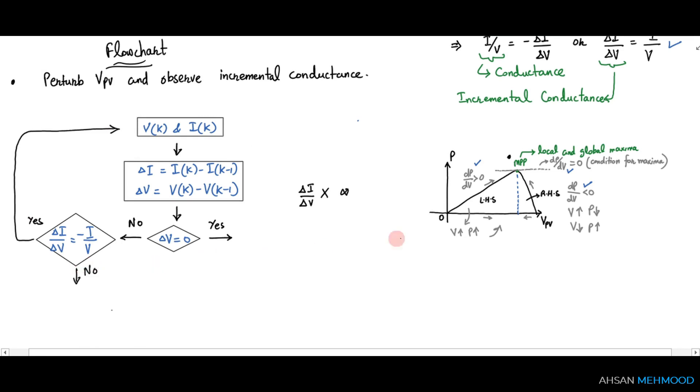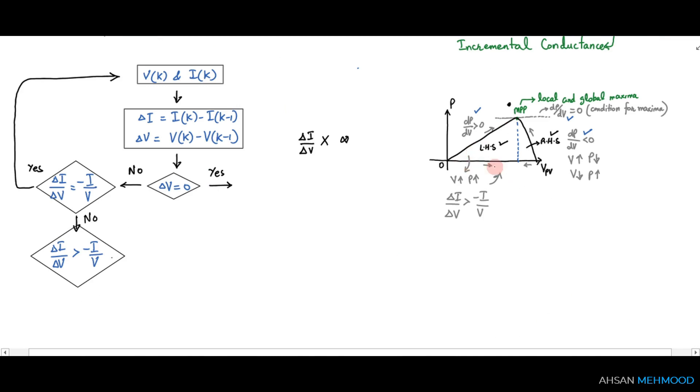We need to check whether we are on the left-hand side or the right-hand side of MPP. If delta i by delta v is greater than minus i/v, then we are on the left-hand side. So what should we do to move to MPP? We should increase the panel's voltage v, which can be achieved by reducing the duty ratio. Therefore, d equals the previous duty ratio, d minus delta d. This is the action we take if we are on the left-hand side.